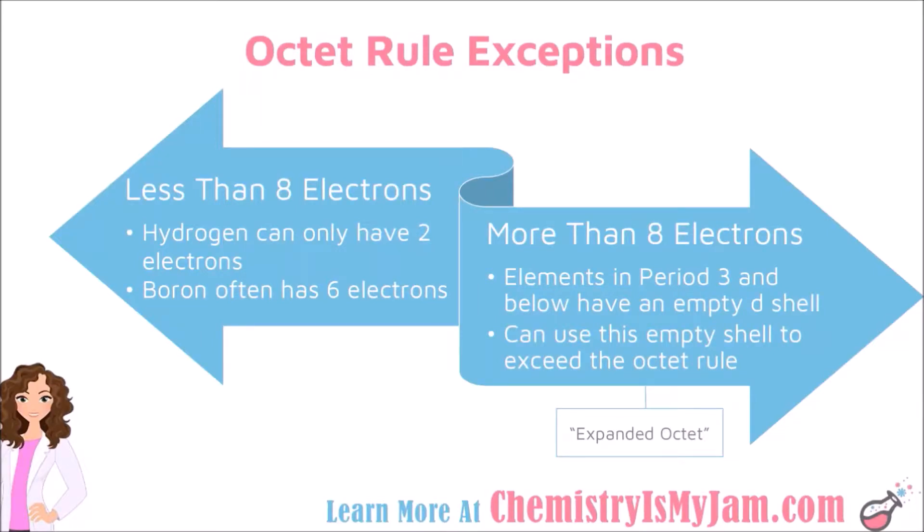In this video, we are going to be focusing on octet rule exceptions, so we are going to be looking at Lewis structures where the central atom has either less than or more than 8 electrons because following the octet rule means having 8 electrons. We need to look at some atoms that don't necessarily follow that rule.